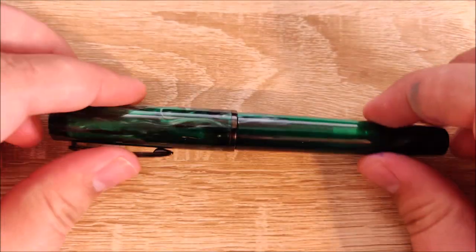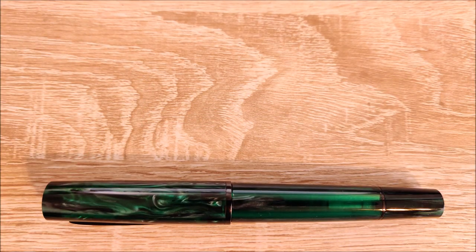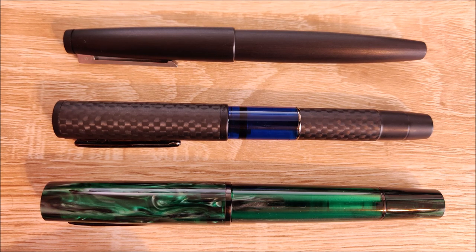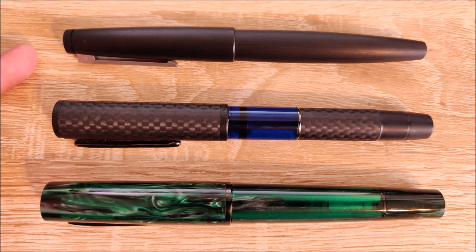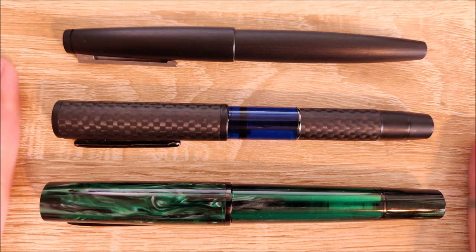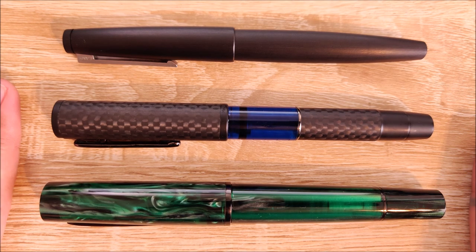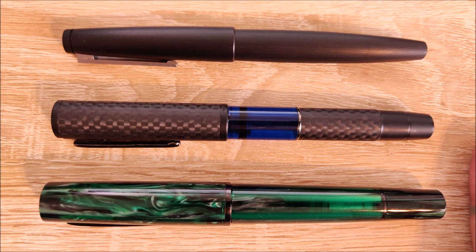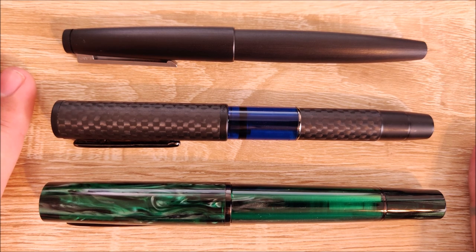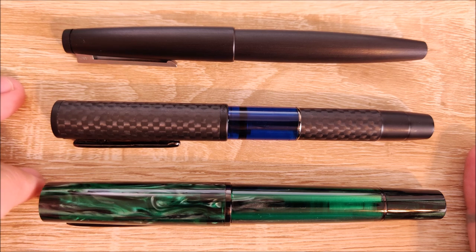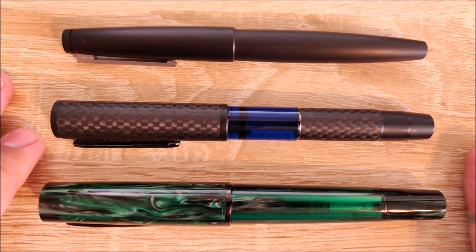And before we do all that, we'll jump into a size comparison. So here's a capped size comparison with some other similar piston fillers. One a little bit more expensive, the Lamy 2000. One a little bit cheaper, the Conklin Word Gauge. And then the Twisby Aurora. So it is the longest pen here. It's not much longer than the Word Gauge, a little bit longer than the Lamy 2000. Overall, I would say a medium-large size pen when capped. It's pretty robust, pretty wide. Not super big, but definitely fairly sizable.